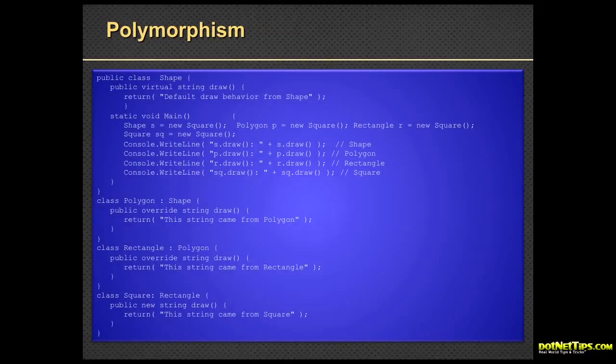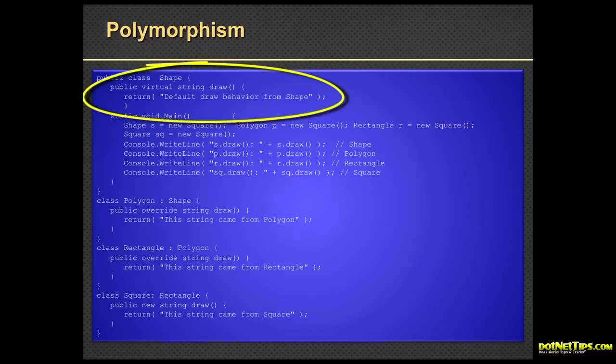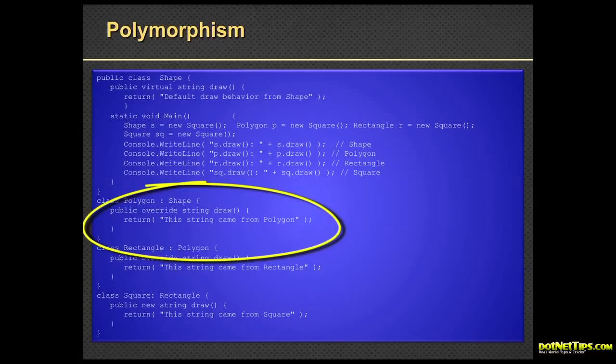This is how polymorphism works. At the top here, you can see I have a class called shape. This is C-sharp, and I'm creating a virtual method in it called draw. Remember before I said you cannot override a method unless the creator of the base class allows you to do that? So in C-sharp, that keyword is virtual. Virtual means an inheriting class can override the functionality of draw. It doesn't have to, but it can. It's up to the person inheriting the class if they want to override draw and implement their own draw. In here, we're just returning back a string called default draw behavior. We have a class called polygon, which inherits shape. In polygon, I'm overriding draw and then returning this string came from polygon. See how the polymorphism starts working?